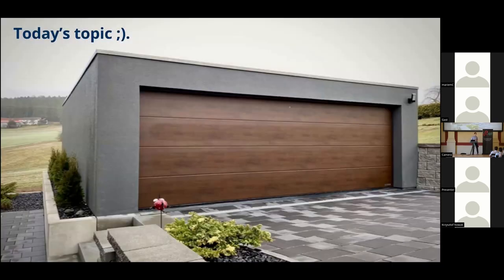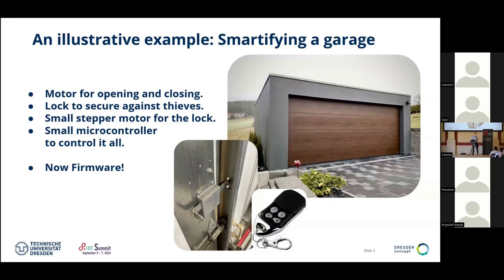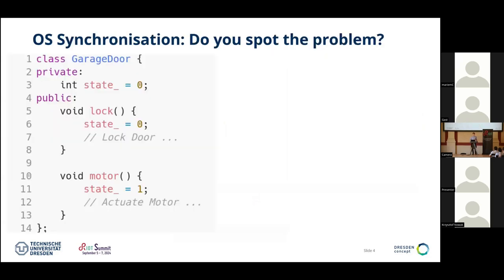Let's start with something a bit more trivial: a garage. We want to build a smarter garage. We have a motor which pulls up the garage door, we have a lock, and we have a remote to open the garage. Now we want to write firmware for it. There are very easy mistakes to make when building embedded systems — concurrent accesses of shared data structures like the garage door.